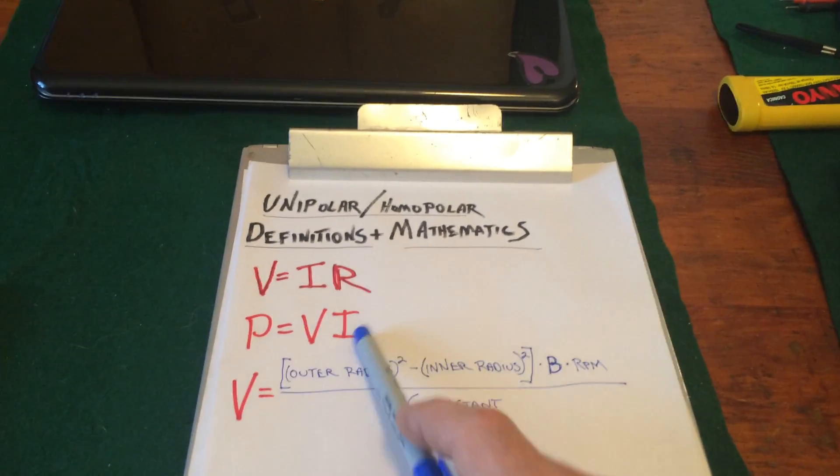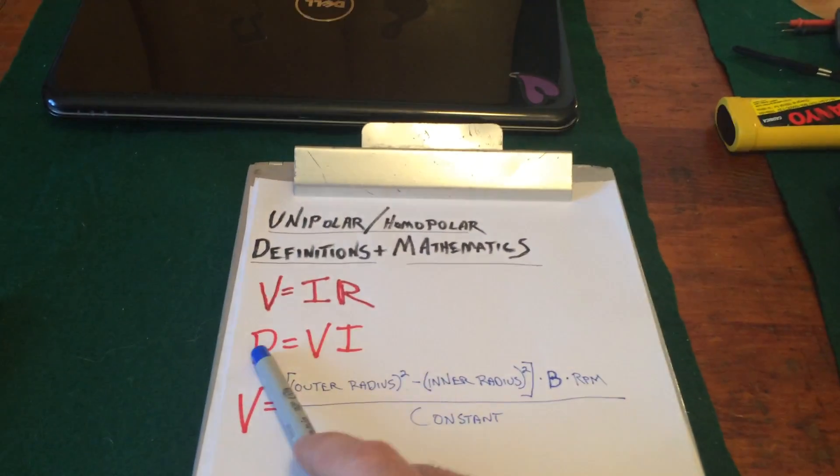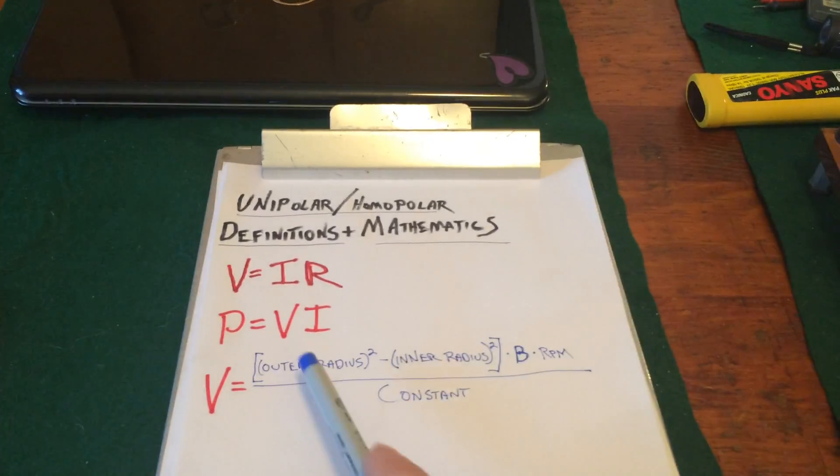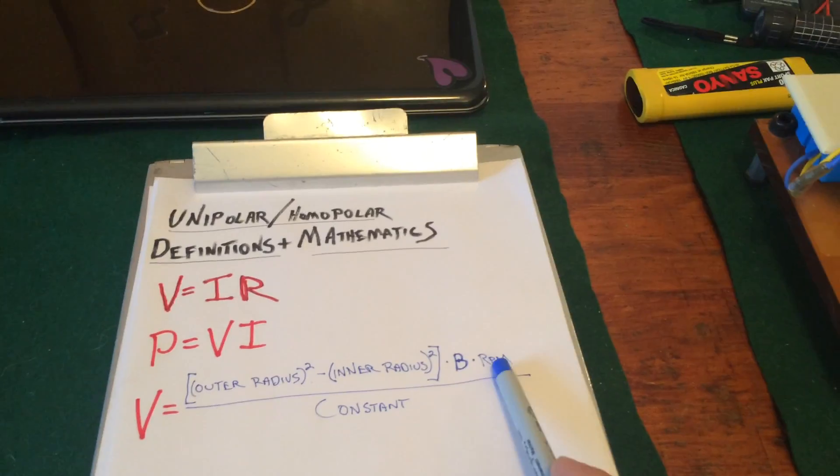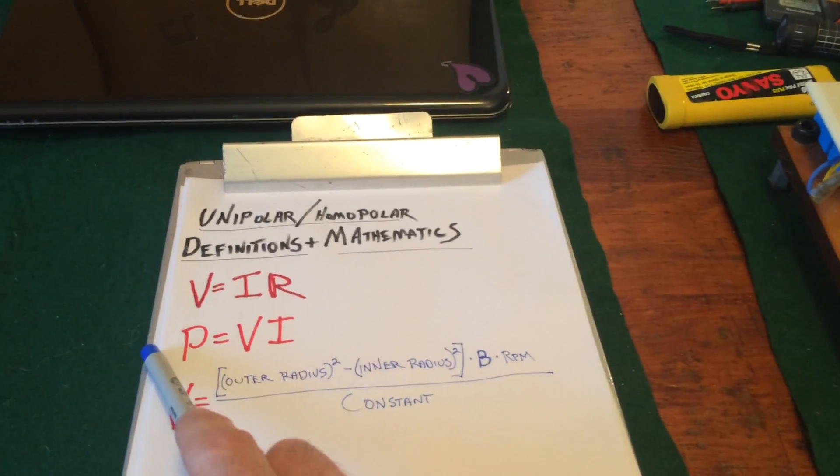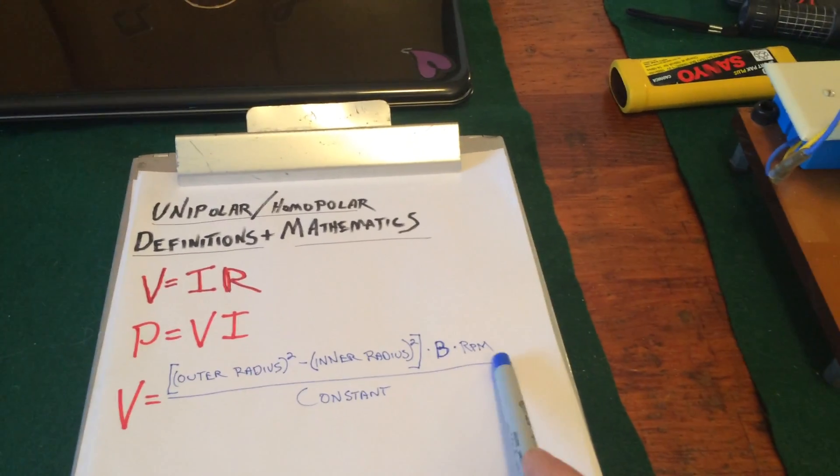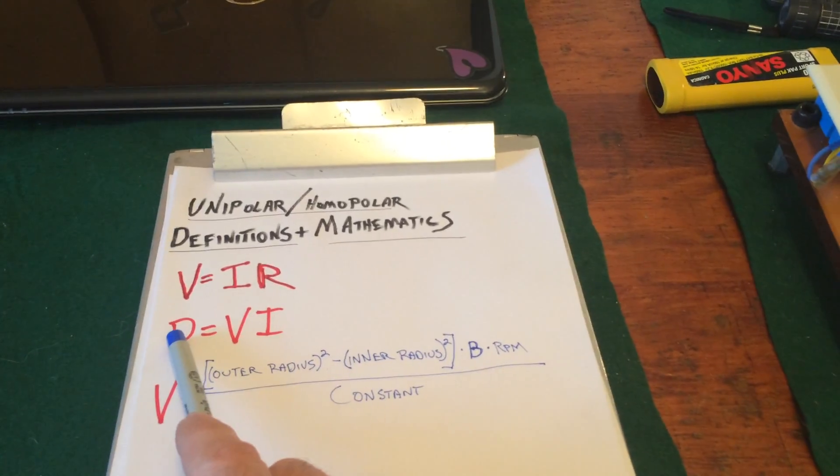The voltage goes up, the current goes up, the power goes up with the square of these functions. So as the RPM doubles, the power is going to quadruple. As the RPM triples, the power is going to go up by a factor of nine.